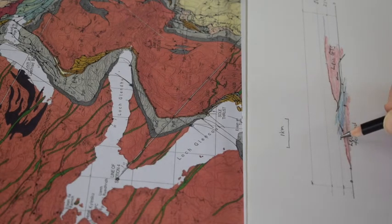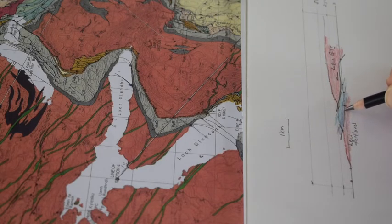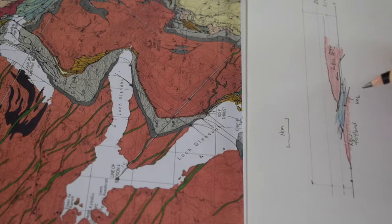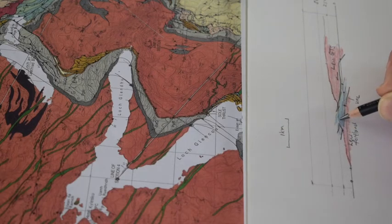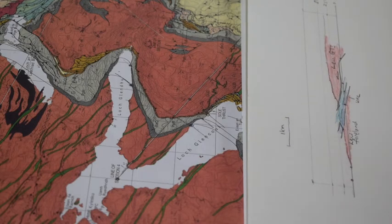The quartzites, I'll just bring that out. There's the unconformity. We've got the pipe rock coming down here, more or less conformable with the lower quartzite that sits beneath it. We've got a little veneer of fucoid beds here, which I could colour in, but it's a bit thin.